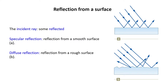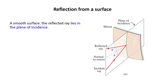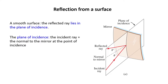In this book, we consider smooth surfaces. For a smooth surface, like the mirror you see here, the reflected ray lies in the plane of incidence. The plane of incidence is defined by the incident ray and the normal to the surface. So here you see that this is the normal to the surface, and we can define the incidence plane using the normal at the point of incidence and the incident ray.